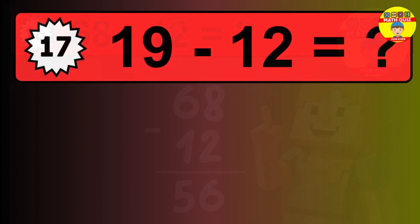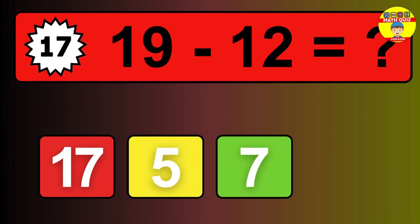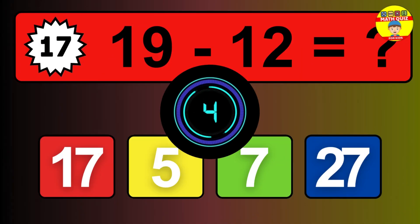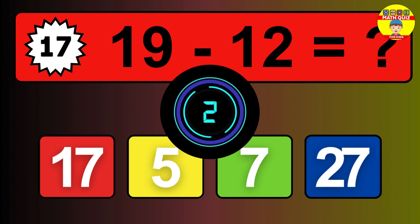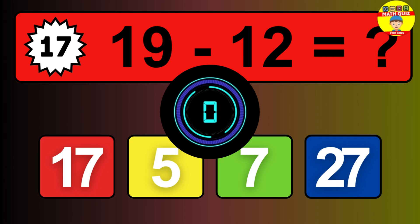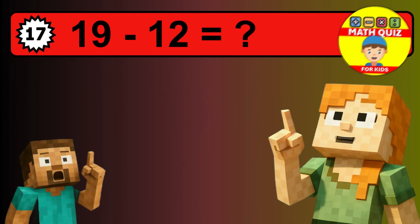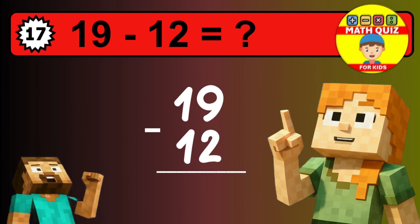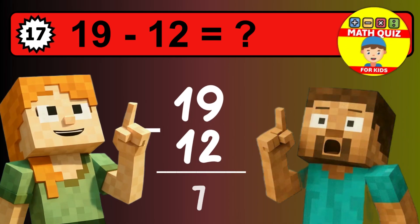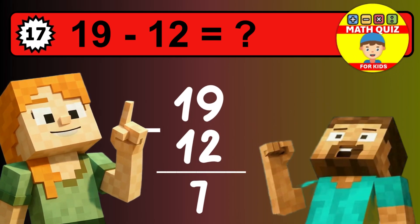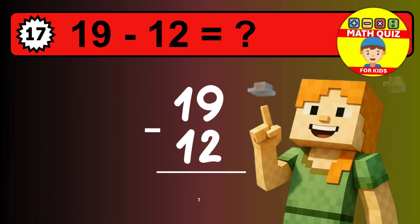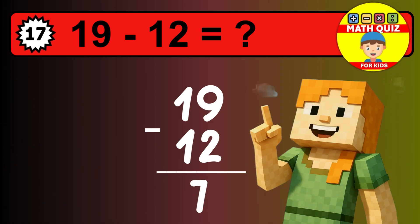What is 19 minus 12? Time to think. Let's solve this step by step. We start with the units: 9 minus 2 is 7. Then we go to the tens: 1 minus 1 is 0. The final answer is 7.